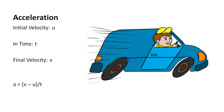So acceleration is v minus u divided by t — that is the rate of change of velocity. In this case it will be 50 minus 30 divided by 1, which equals 20 meters per second squared. So acceleration means the rate of change of velocity: final velocity minus initial velocity divided by time t.